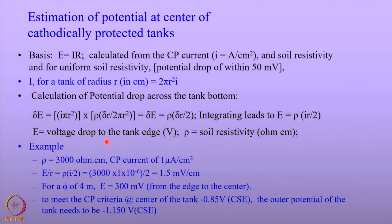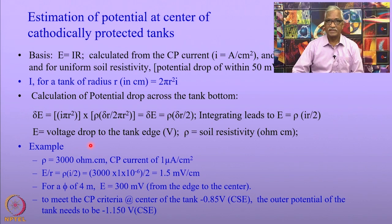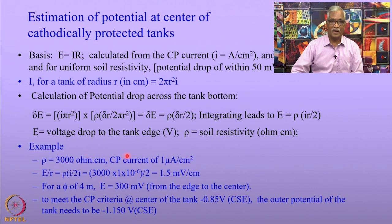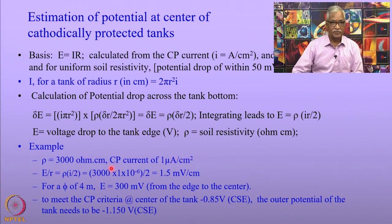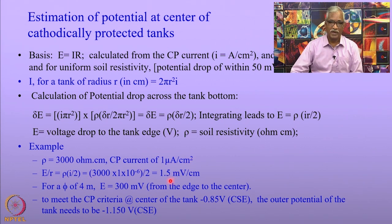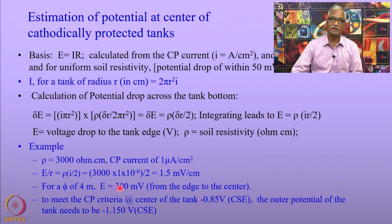To illustrate this, consider a case where the soil resistivity is 3000 ohm-centimeter and the current required for cathodic protection is 1 microampere per centimeter square. Substituting these values in the equation, the potential drop across 1 centimeter turns out to be 1.5 millivolt. For a tank of 4 meter diameter, the voltage drop from the edge to the center turns out to be 300 millivolt.